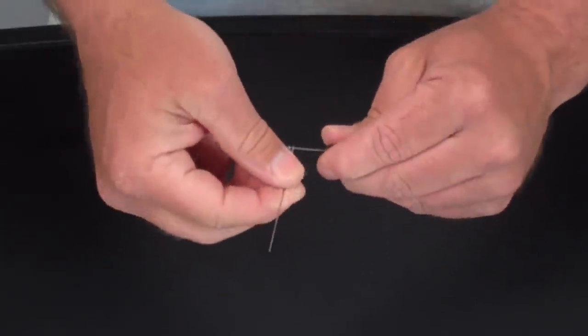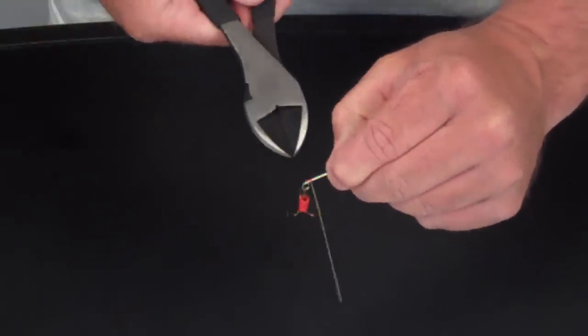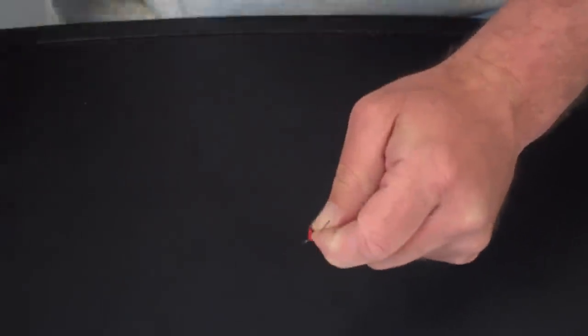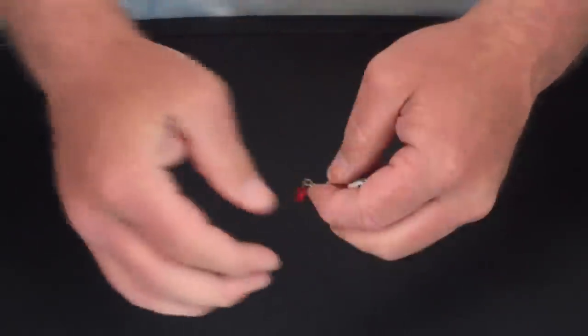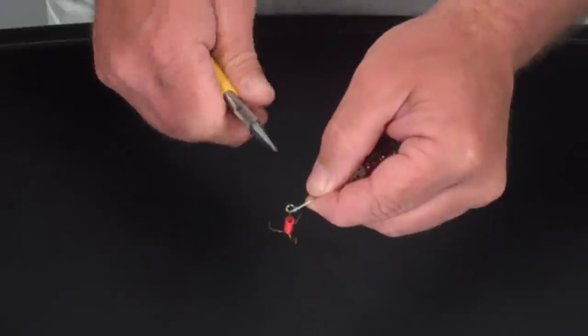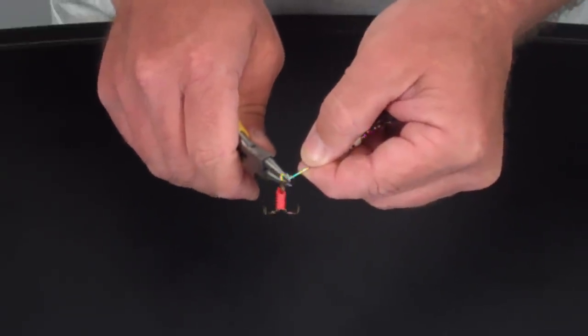With the wrap complete, we can now trim off our tag end as close to the main wire shaft as we can. The next thing is to go ahead and straighten up that loop, make it inline with the main wire shaft.